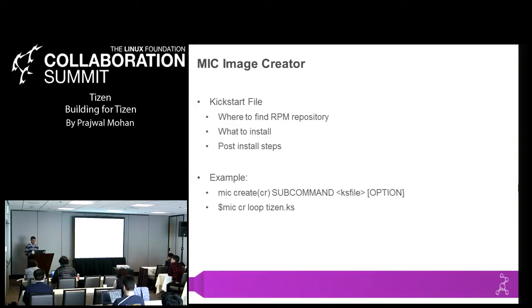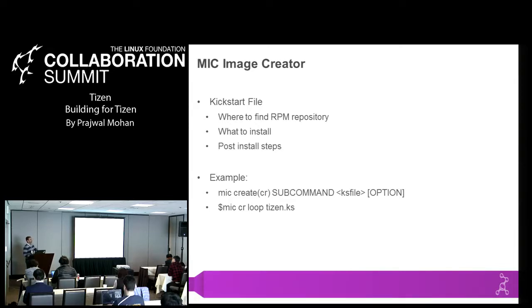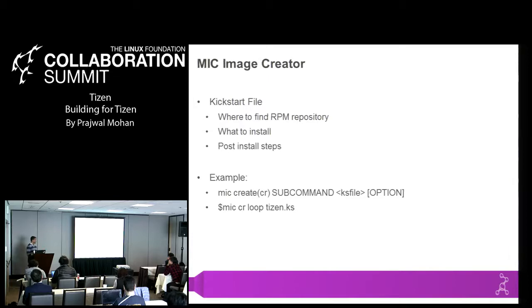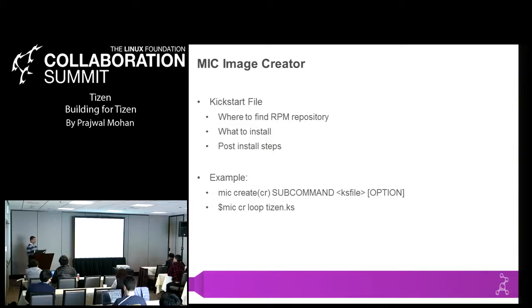An example MIC command would be: MIC create — CR is for create — and it's creating a loop device. The subcommand specifies the kind of image you're trying to create: live CD, live USB, loop image, or raw image. Then you specify the kickstart file to use. MIC has other options as well, which are documented on source.tizen.org.